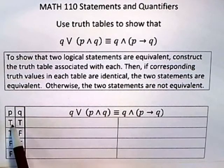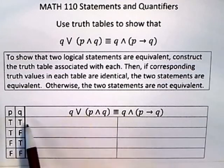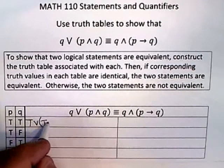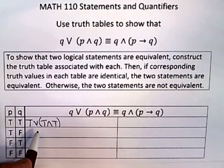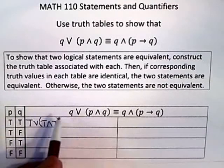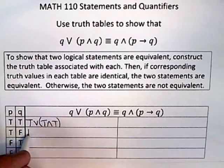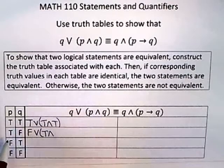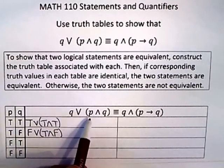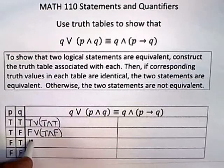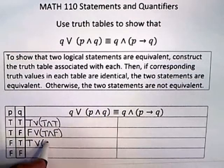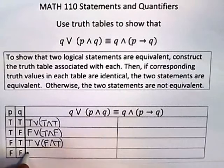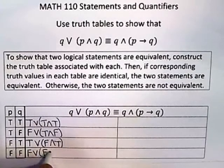By now you're used to the technique I use. On the first row I put T and T for everything — both P and Q are true — so I get true OR true AND true. In the second row, P is true and Q is false, so I get F or T AND F. Moving down, P is false but Q is true, so I get true OR false AND true. And then the last row, both are false, so I get false OR false AND false.